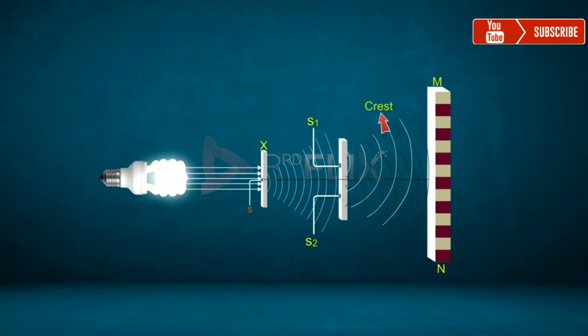When the crest and trough of a wave fall on the crest and trough of another wave, respectively, we get two constructive interference patterns and a bright band is observed on the screen MN.